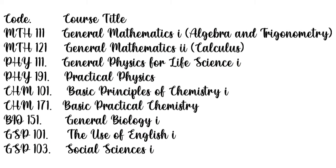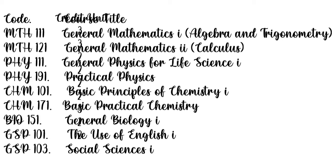In year 1 in pharmacy, you'll be offering General Math 1, which is called Math 111 — Algebra and Trigonometry. Math 121 — General Math 2, Calculus. Physics 111 — Physical Physics for Life Sciences. Physics 191 — Practical Physics. Physics 101, Basic Principle of Chemistry. Chemistry 171 — Basic Practical Chemistry. Bar 151 — General Biology 1. GST 101 — Use of English 1. GST 103 — Social Sciences 1.